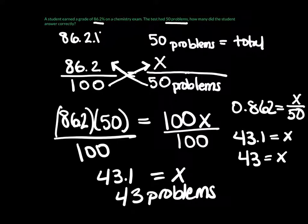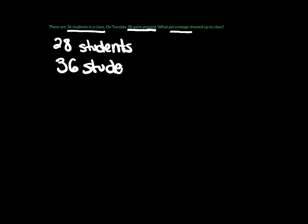Either method works. Let's try another one. There were 36 students in a class. On Tuesday, 28 were present. What percentage showed up to class? We have two pieces of information: the number of students present on the given day and the total number of students in the class. We have 28 students out of a total of 36 students. Let's label that bottom number the total.